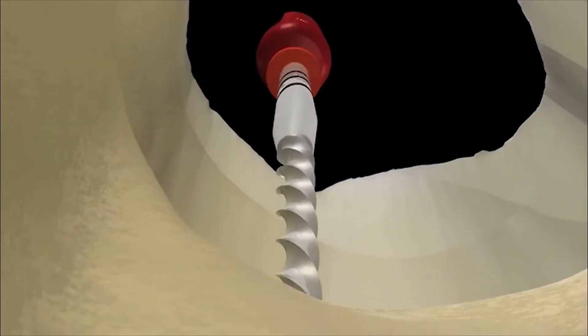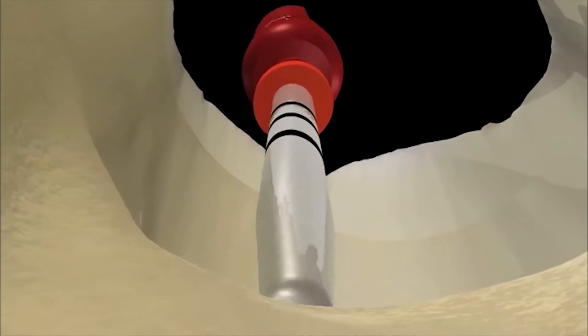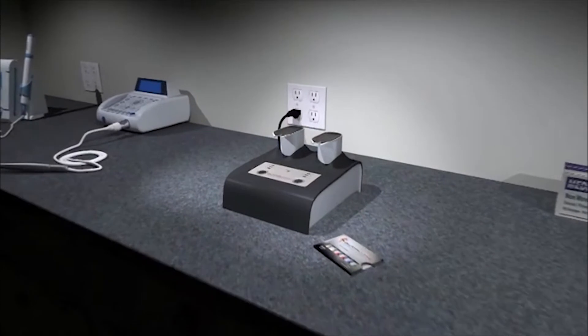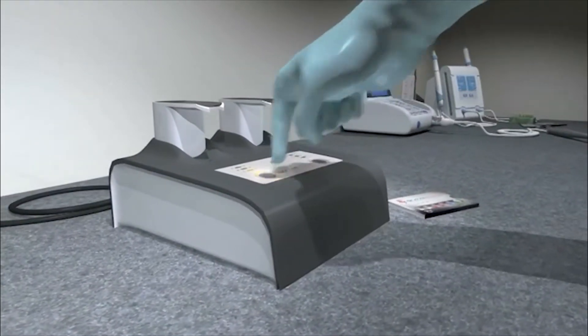Start by checking your final shape with a size verifier. It should fit passively at working length. After performing your final irrigation, turn the oven on by holding the size button until lit.